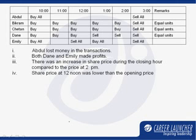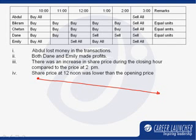In this question we have to find the relative pricing at different points of time. The first statement says that Abdul lost money in the transactions, therefore there is definitely a drop of price from 10 a.m. to 3 p.m., because 3 p.m. is the time when Abdul sells. So there is a definite drop of price from 10 to 3 which we can be sure of.